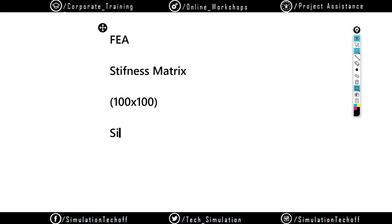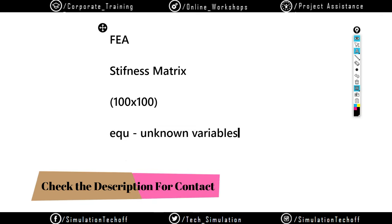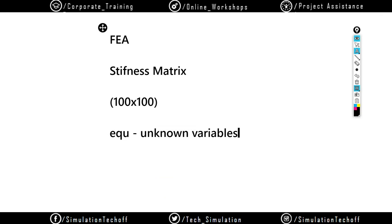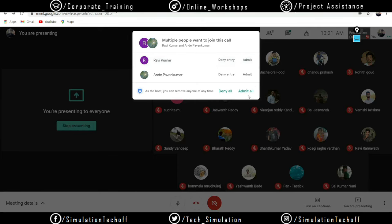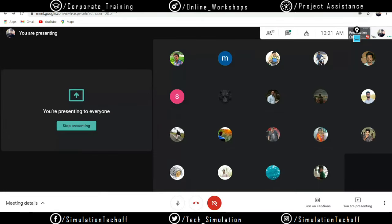Once the stiffness matrix is created, it converts that stiffness matrix into simultaneous equations — also called algebraic equations — and then calculates for the unknown variables. If the matrix size is much larger, the solving time will be much higher. That is why we always recommend using a coarse mesh rather than a fine mesh when discretizing the model. A fine mesh gives a lot of nodes and elements, which increases analysis time. Although you get better results with a finer mesh, considering the time factor, we try to solve the problem as simply as possible.